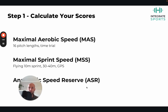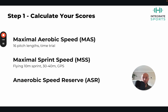In step one we calculate three different scores: your Maximal Aerobic Speed (MAS) score, your Maximal Sprint Speed (MSS) score, and based on these two numbers, your Anaerobic Speed Reserve. The anaerobic speed reserve gives you an idea of your speed reserve above your aerobic capacity, which is super important in hockey because of the repeat sprint demands. The top two scores are most important to establish first.